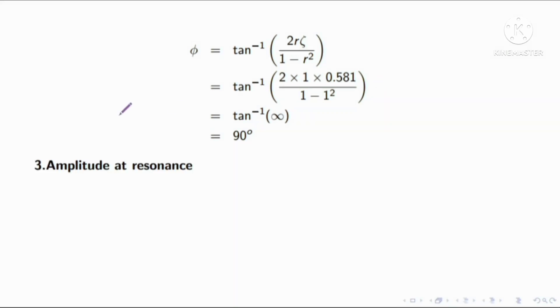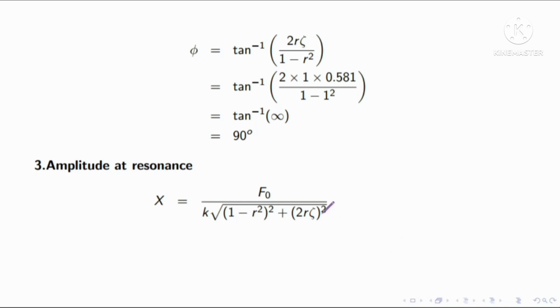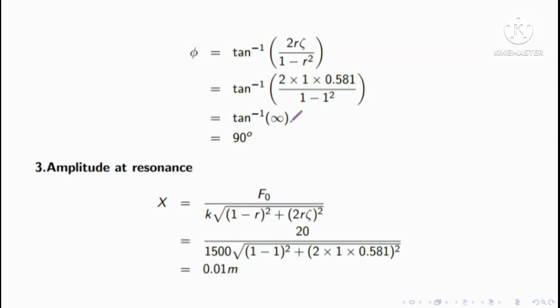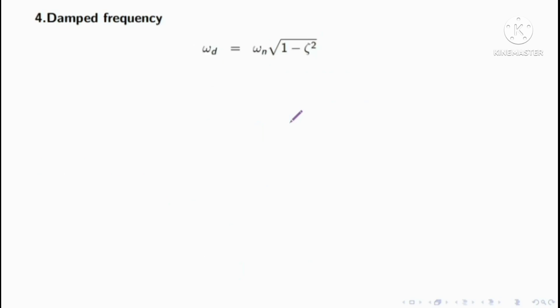Finding the amplitude at resonance: x is equal to f0 divided by k, into root of 1 minus r squared, whole squared, plus 2r zeta squared. Substituting values gives 0.01 meter.